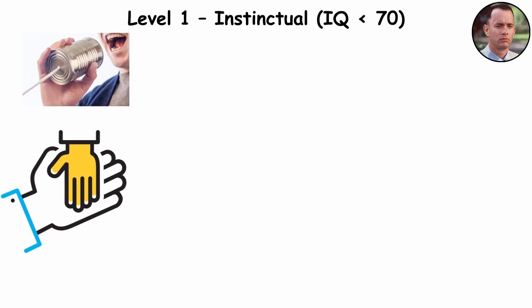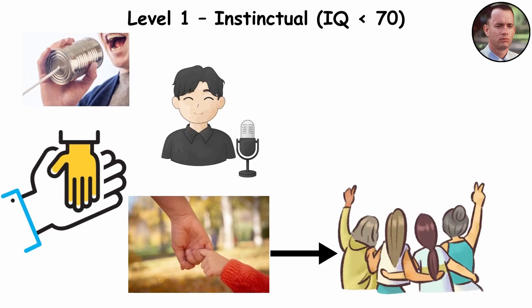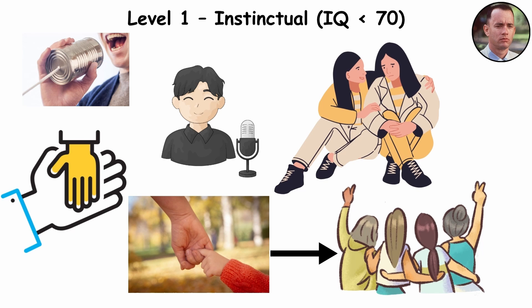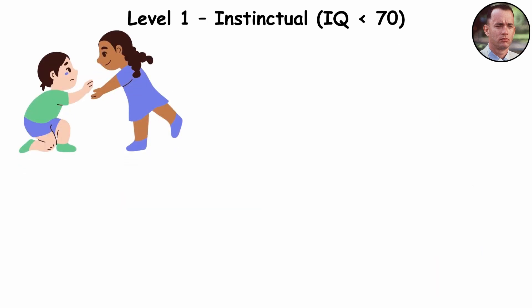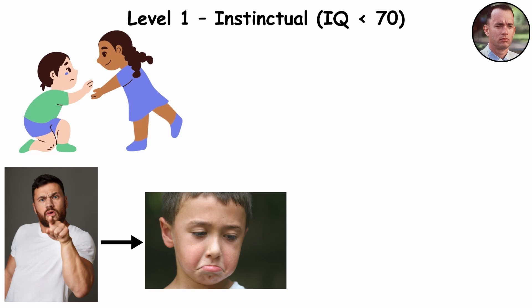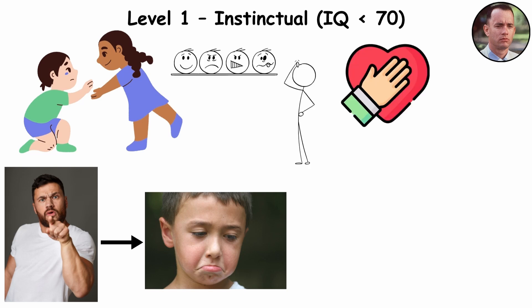They rely on familiar voices, gentle tones, and steady presence to make sense of the moment. But even without language, emotion speaks fluently. A kind look can calm them, and a harsh sound can break their peace. In their world, emotion is the first language, and maybe the most honest one.